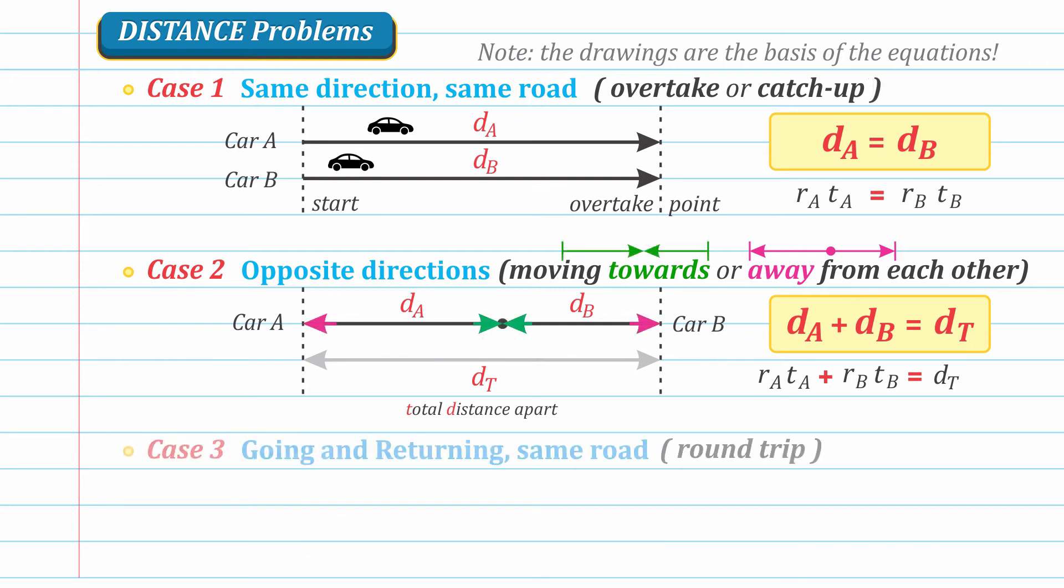Now, the third case is called the round trip case. This involves going to a destination and then returning from that destination back to the starting point. We can call the distance going as D sub G and the distance returning as D sub R. And from these drawings,